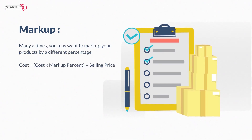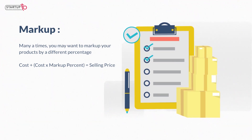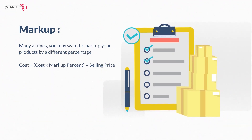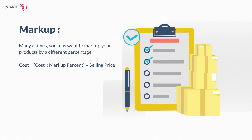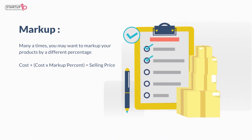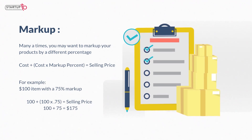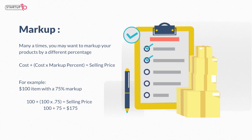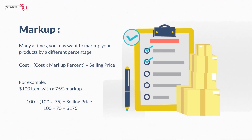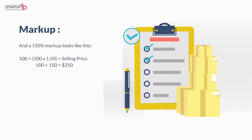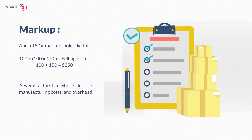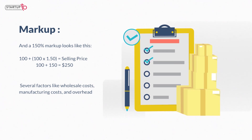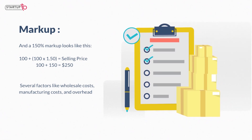Many times you may want to mark up your products by a different percentage to get the price. You will need to use the markup formula. For example, a $100 item with a 75% markup and a 150% markup are calculated using this formula. The markup percentage and your base product cost will depend on several factors like wholesale costs, manufacturing costs, and overhead. Based on these factors, you can use the above math to calculate the selling price.